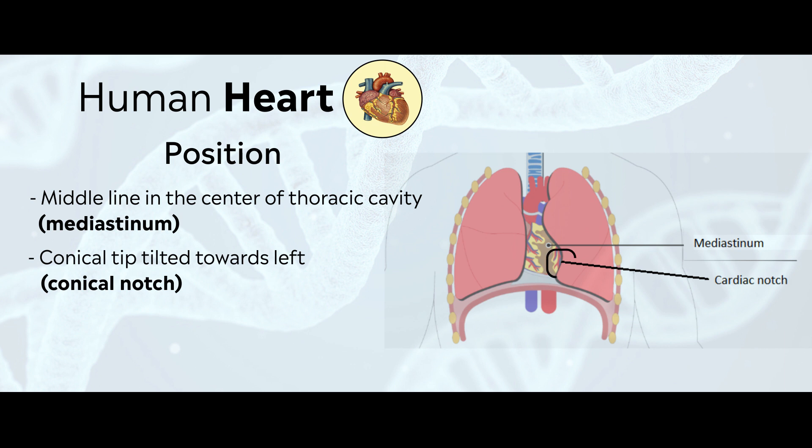If you look here, in the left lung there is one small depression called the cardiac notch. The tip of the heart is actually inserted in that cardiac notch. That's why we feel more pressure towards the left. So that's about the shape, size, and location of the heart.